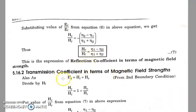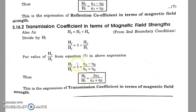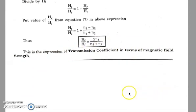For the transmission coefficient in terms of magnetic field strength: HT = HI + HR. Dividing both sides by HI, HT / HI = 1 + HR / HI. Substituting the formula HR / HI = (eta1 - eta2) / (eta1 + eta2) and solving, we get HT / HI = 2*eta1 / (eta1 + eta2). This is the expression for the transmission coefficient in terms of magnetic field strength.